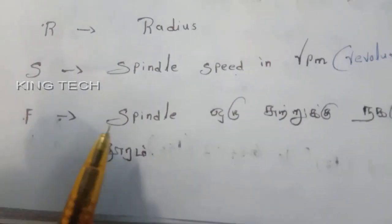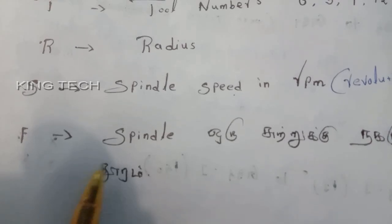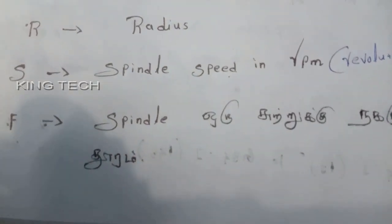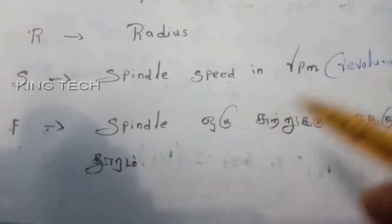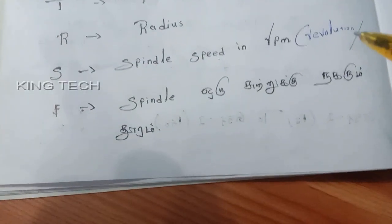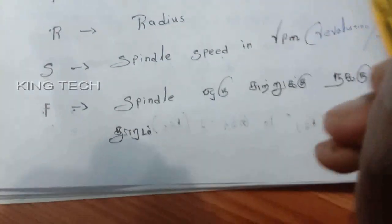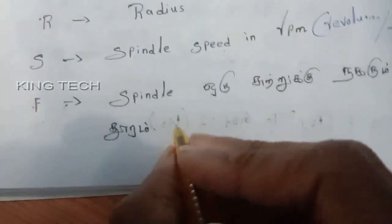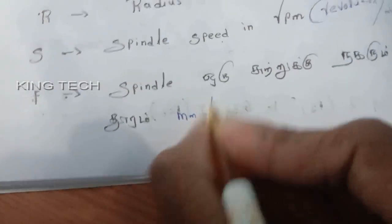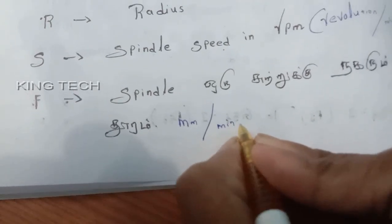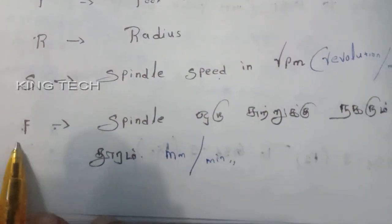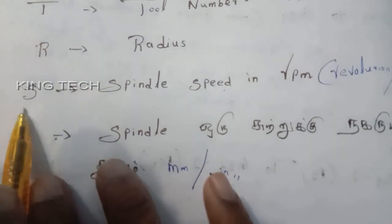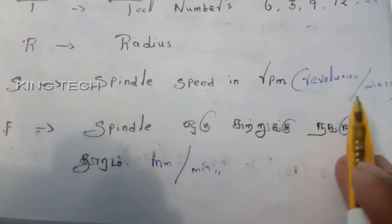F means feed speed. Feed, the unit is per minute. Feed is in mm per minute. Spindle speed is in revolution per minute.